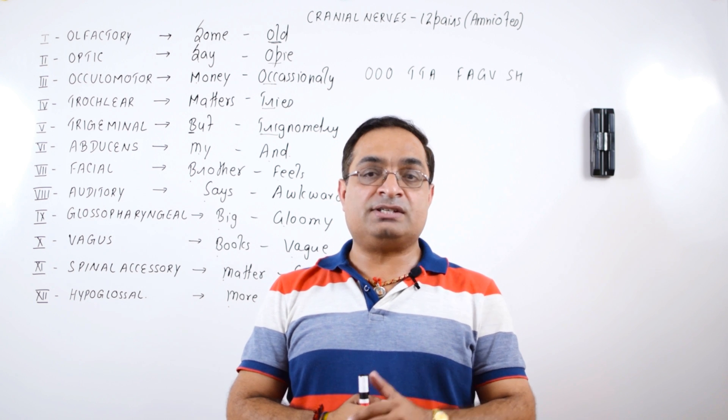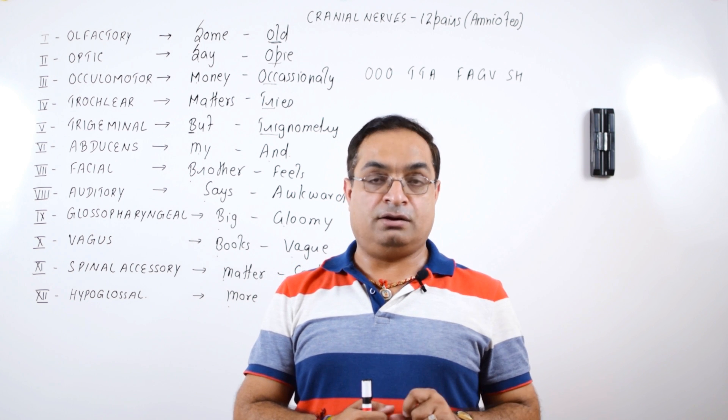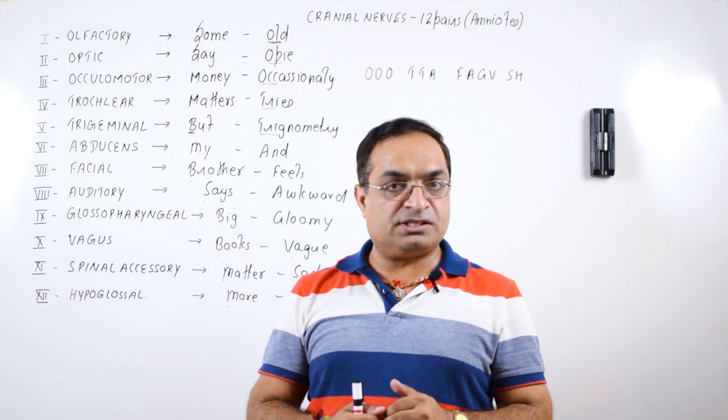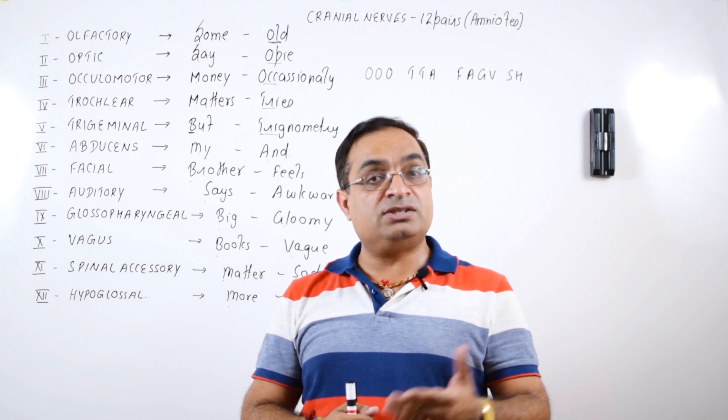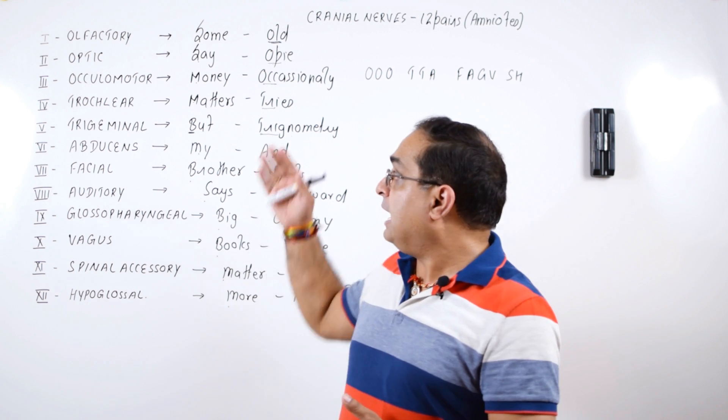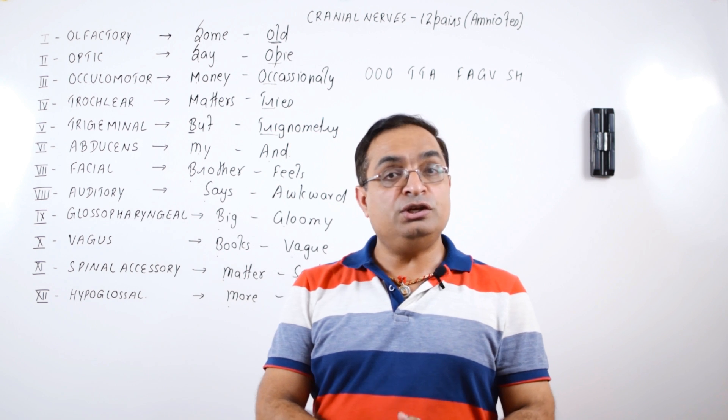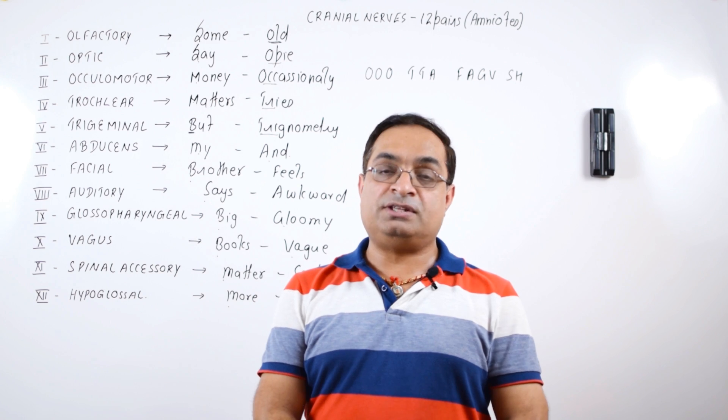In the second part of this lecture, we'll discuss the functions of these cranial nerves. Olfactory related to sense of smell, optic related to sense of vision, oculomotor is related to movement of the eyeball and so on. So we'll continue this in the second part of this lecture.